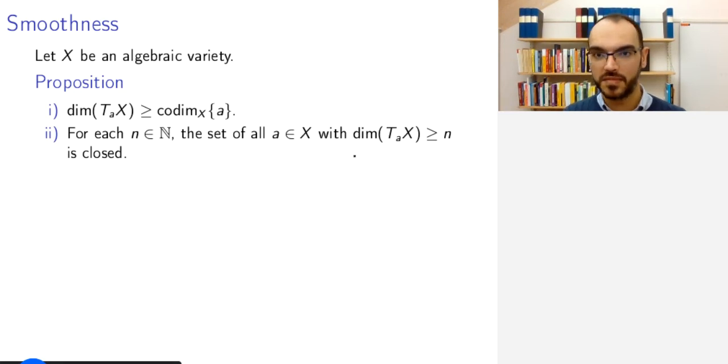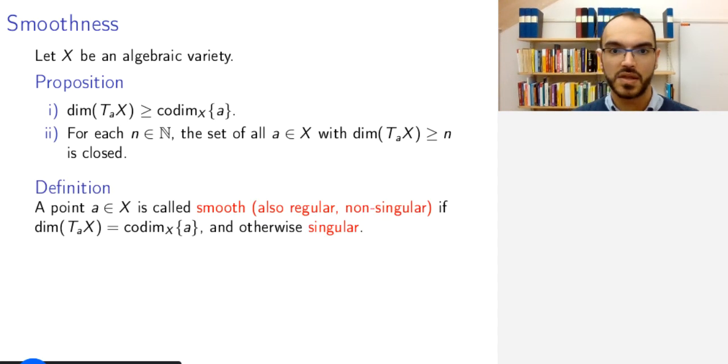this amounts to some minors managing some rank, the rank of some matrix, namely the matrix defining the tangent space being at most something. And so this is a closed condition and therefore this set is closed. The second property is known as the upper semi-continuity property of the dimension.